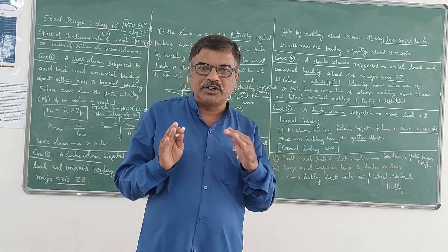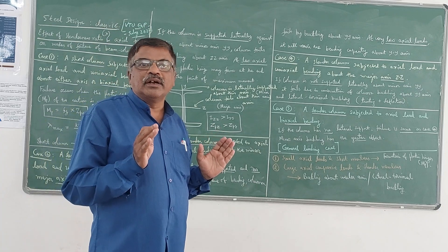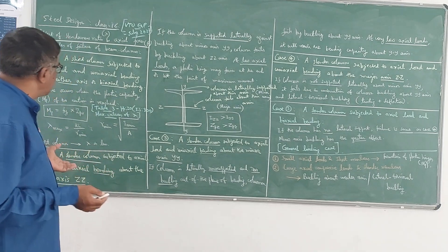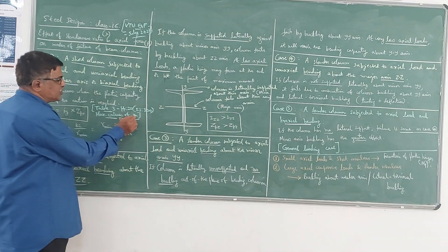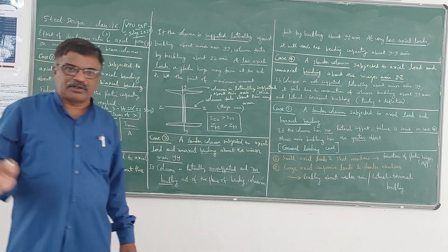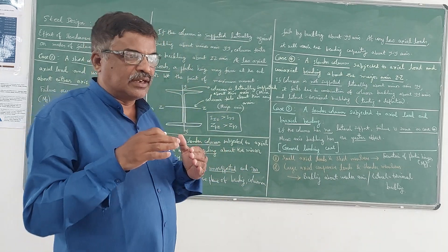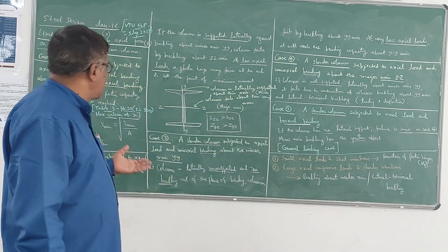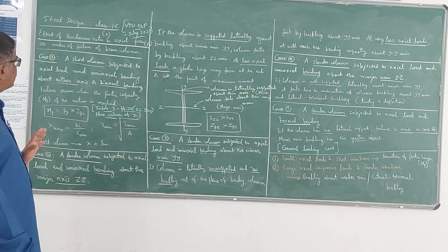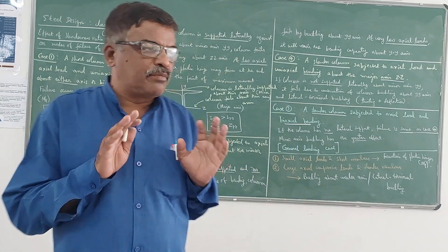Normally you will have two types of columns: one is a short column and another is a slender column or long column. Depending on the value of the slenderness ratio, you can distinguish between short and long columns. You can see the maximum values of slenderness of beam columns.